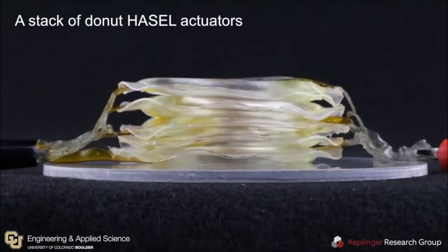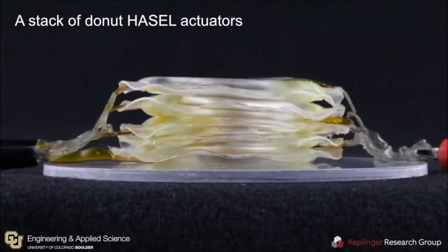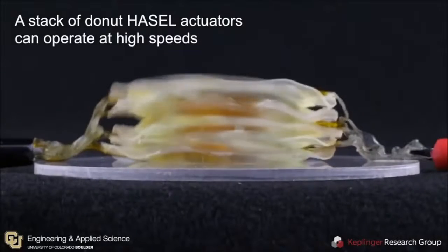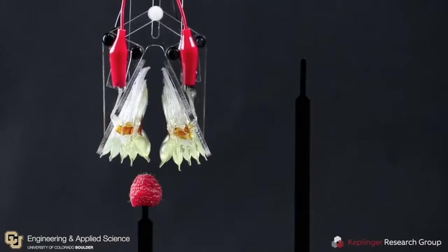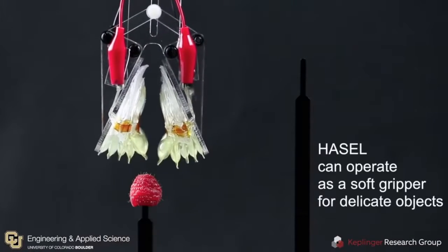Just like biological muscles, HASEL actuators can produce the adaptability of an octopus arm, the speed of a hummingbird, and the strength of an elephant.